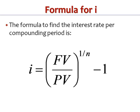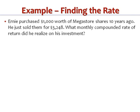I'll show you that in just a second. So let's have a look at an example. In this case, Ernie is looking at some shares he purchased in Megastore. He bought $1,000 worth of shares 10 years ago and he just sold those shares for $3,248. So he's just over tripled his money in those 10 years. What kind of rate of return is that? Let's work that out as a J12, or as a monthly compounded rate of return, and see what he gets.